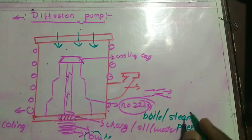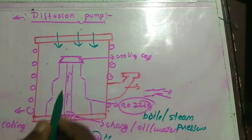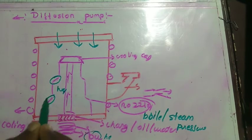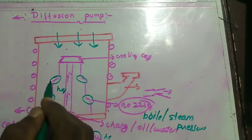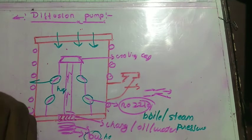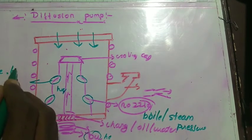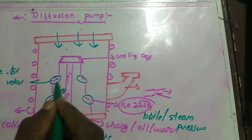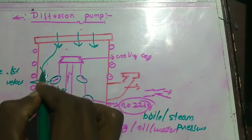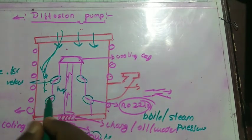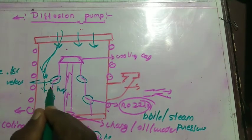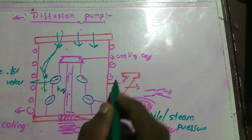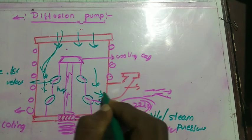The pressurized steam — whose pressure is much more than what we desire — gets out of the chamber with the help of the nozzles. The nozzles convert the pressurized steam into high-velocity steam. This high-velocity steam mixes with the inlet fluid coming from the inlet of the diffusion pump, and the velocity of these steam molecules is transferred to the molecules coming from the inlet, which then flow out of the chamber along this path.